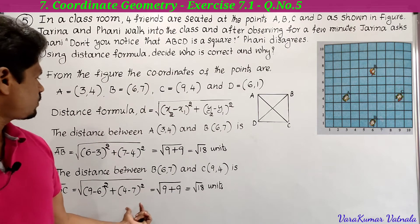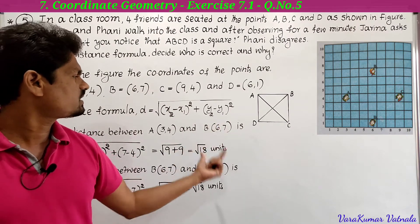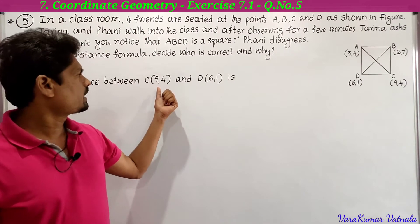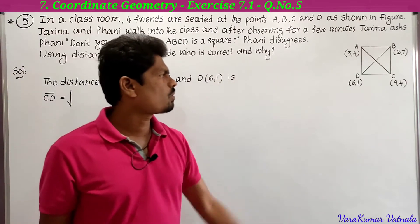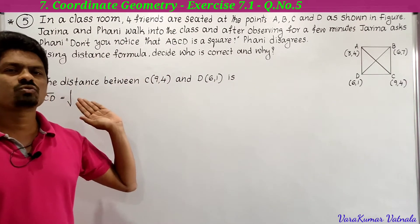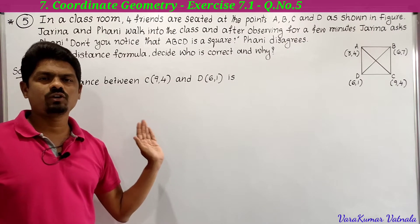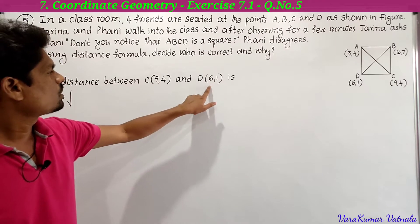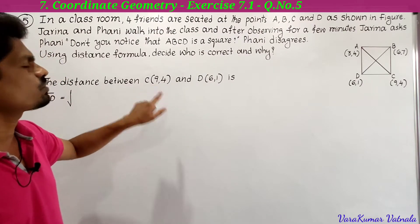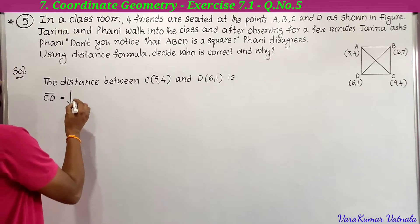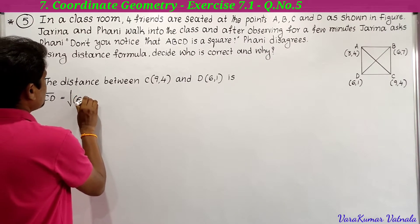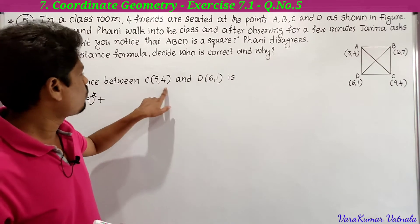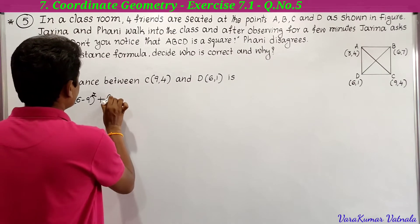Next, we find the distance between C(9, 4) and D(6, 1). CD = √[(x₂ - x₁)² + (y₂ - y₁)²]. Here x₁ = 9, y₁ = 4, x₂ = 6, y₂ = 1. So CD = √[(6 - 9)² + (1 - 4)²] = √[(-3)² + (-3)²] = √[9 + 9] = √18 units.